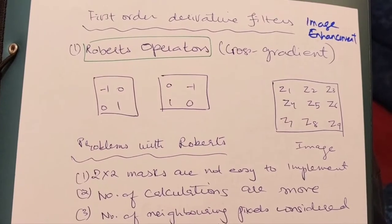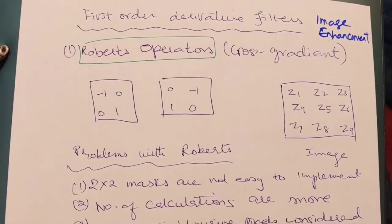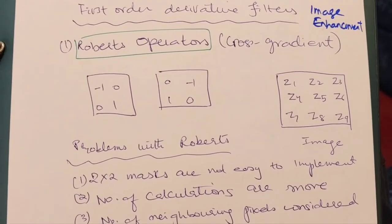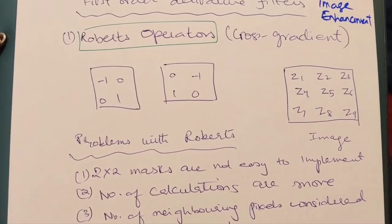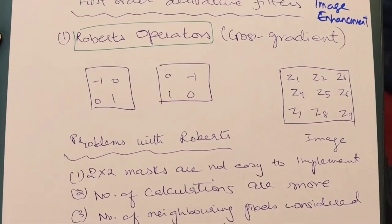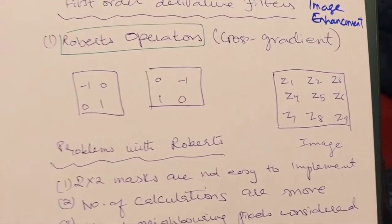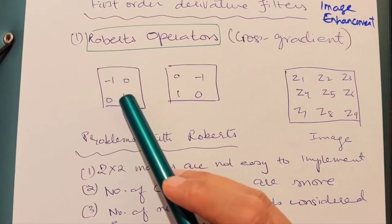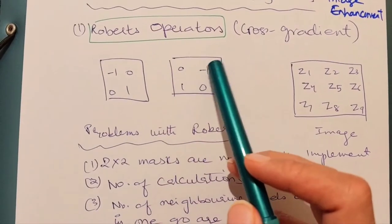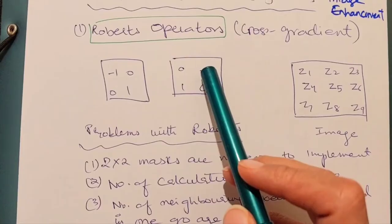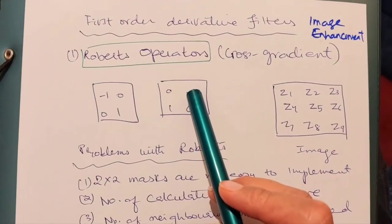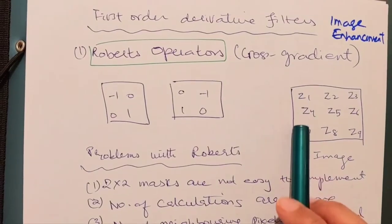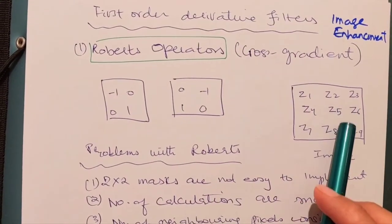There are basically three types of first-order derivative filters. The first one is the Roberts operator, which we also call a cross gradient filter. We call it cross gradient because the ones in this filter are positioned on diagonals — that is why the Roberts operator is called a cross gradient.